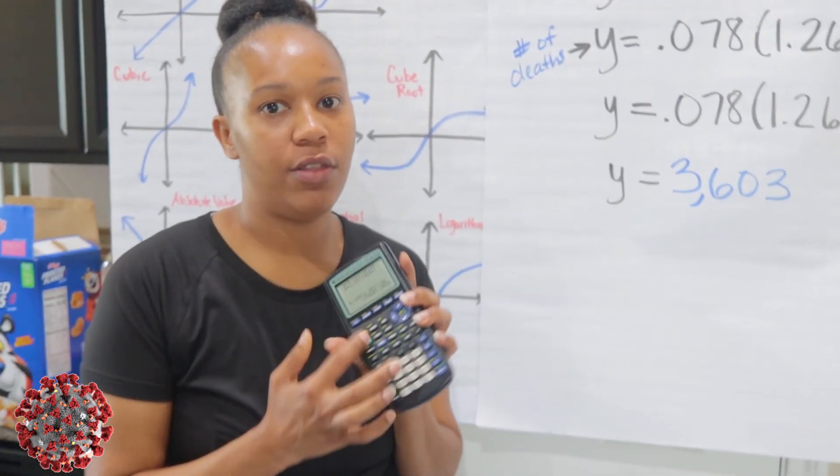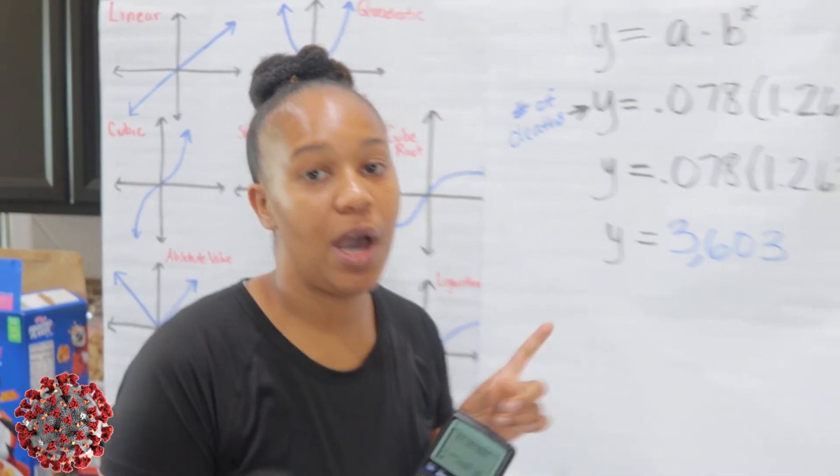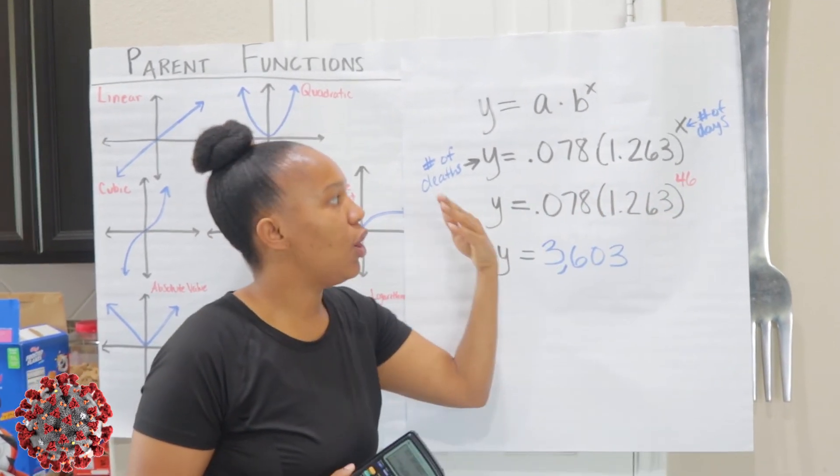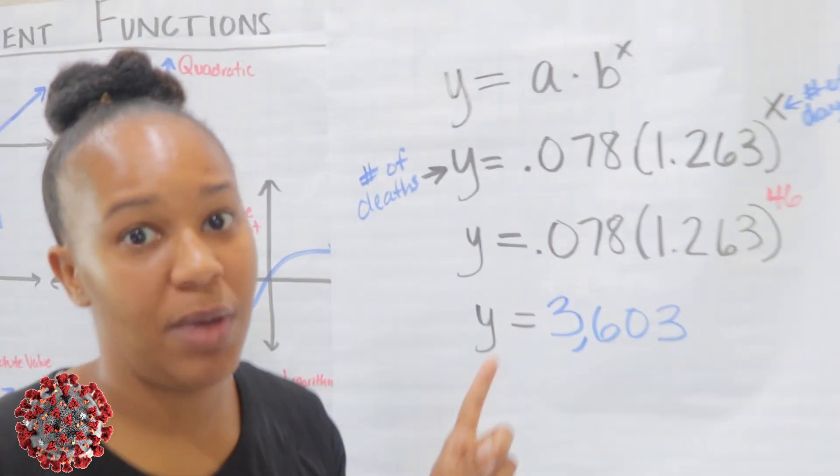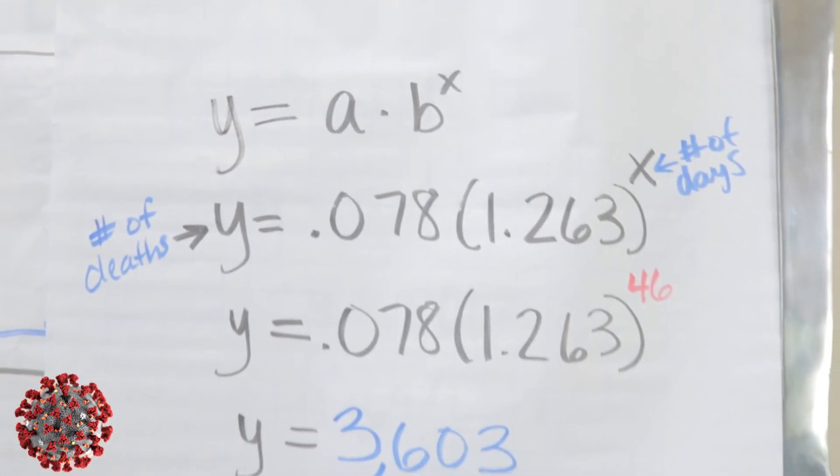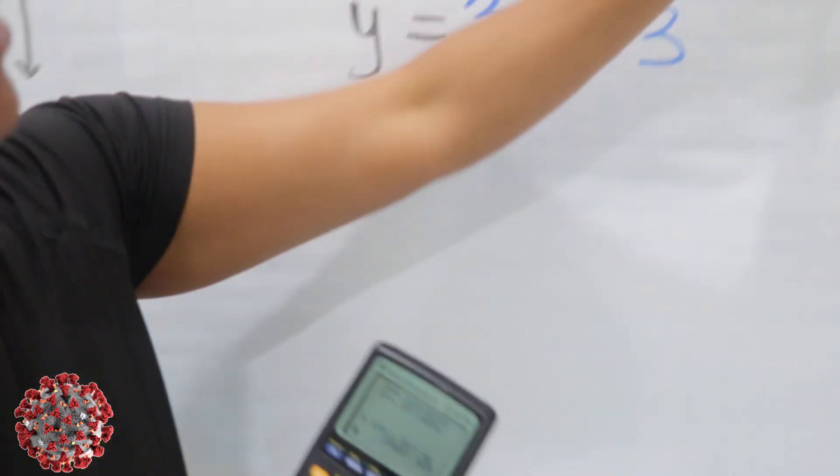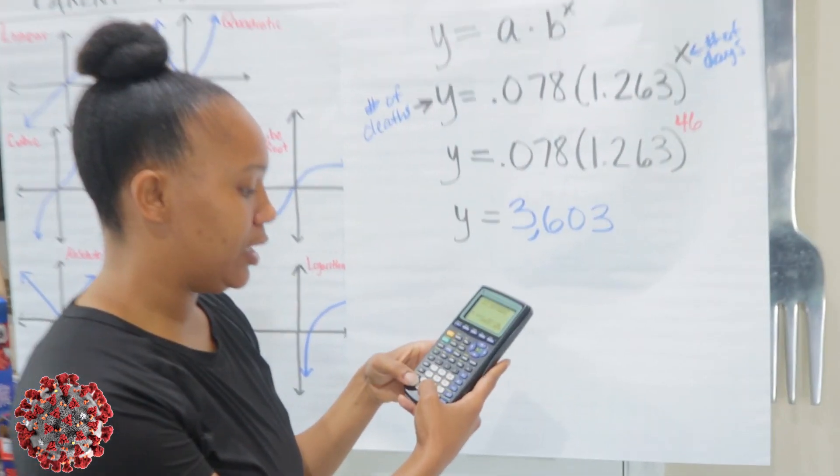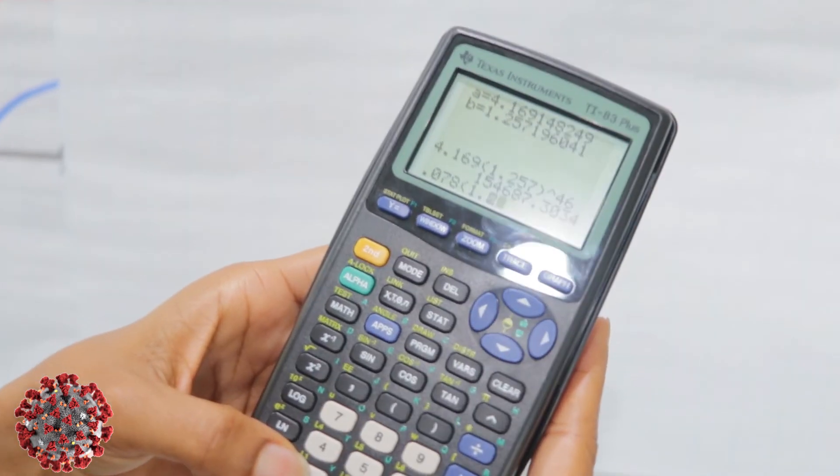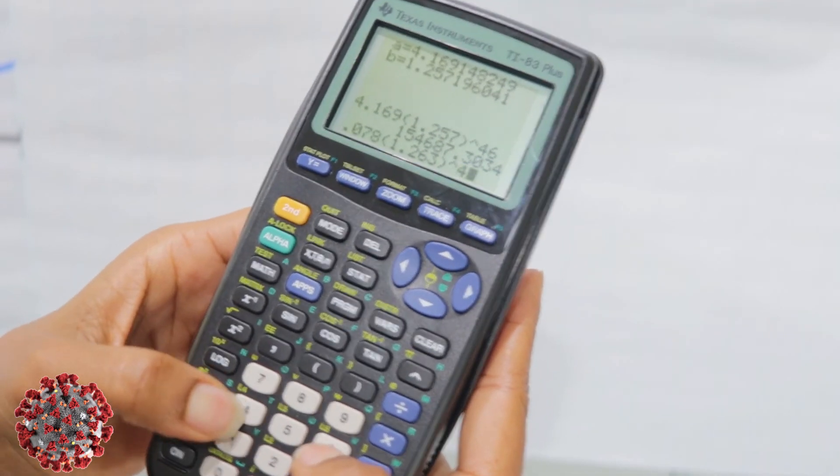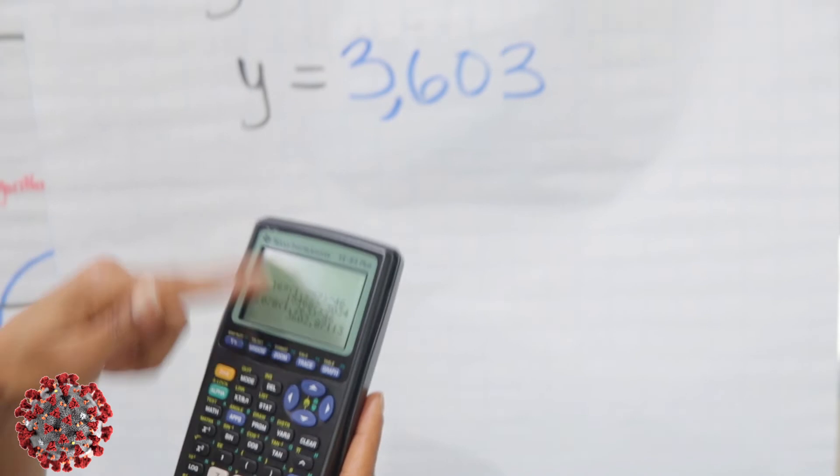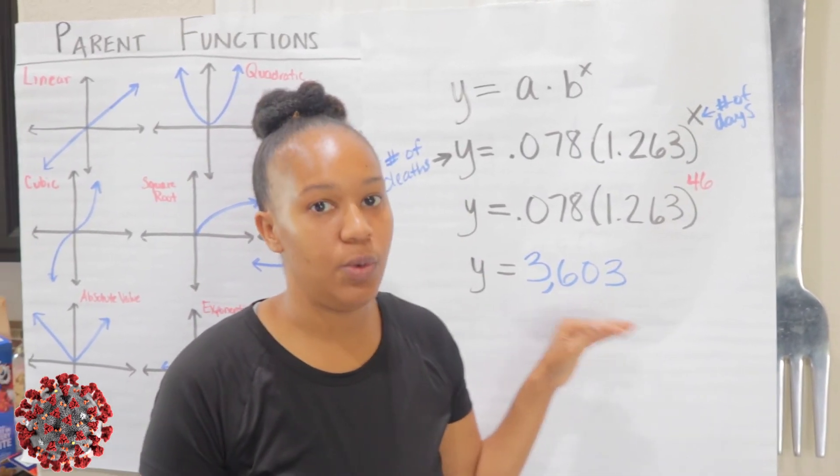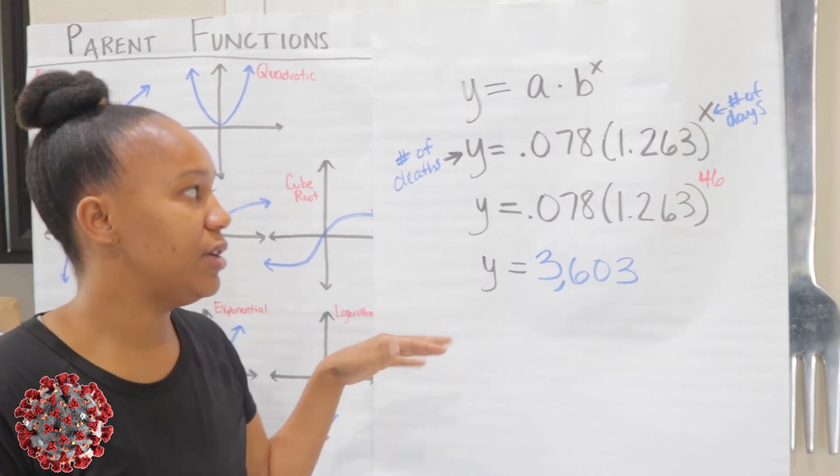And as you can see, the number of deaths is also growing exponentially. So I went through, when I did the same exact thing on the graph and calculator, to determine the equation that models the number of deaths. And this was the value I got for a: 0.078. And this was the value I got for b: 1.263. So this gives us an equation to model the estimated number of deaths, assuming we do nothing. And so if I plug that in my calculator, again I want to estimate how many deaths we could possibly have on day 46, which would be the end of the month, March 31st. So I'm going to plug this in my calculator to get an estimate for it: 0.078 times 1.263 raised to the 46th power. Hit ENTER, and if I round that to the nearest whole number, we can expect to have 3,603 deaths by the end of the month in the US.